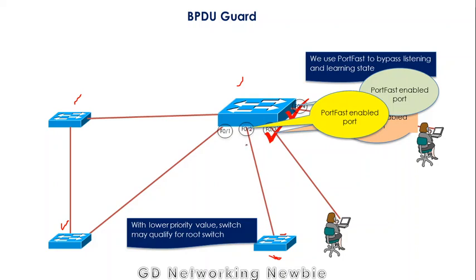BPDUs will be exchanged between all of these switches, and this new switch may be selected as the new root switch in the network. If that happens, it may create problems and introduce issues we don't want — it may destroy our existing STP tree.